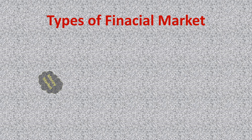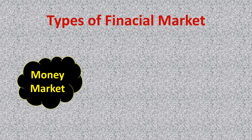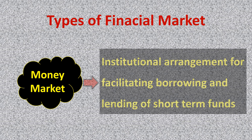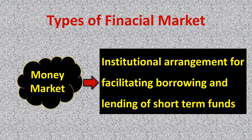Next comes the money market. It is the market where short-term funds are bought and sold. The money market instruments like commercial papers, commercial bills, treasury bills, etc. are the financial assets mainly used in the money market — this is the market where these instruments are bought and sold.